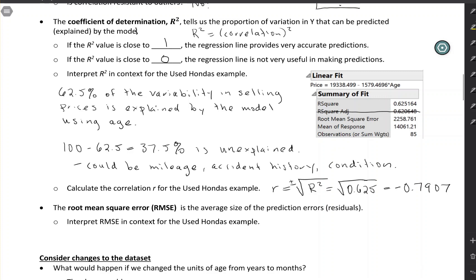One last way to see how accurate your predictions are is the root mean square error. We interpret that as the average size of the prediction error or the average size of the residuals. We can see our RMSE up here is 2259, roughly. So that means if we use this model, if we're using the model that's just using age as the predictor, our predictions will be off by this amount, 2258 on average.